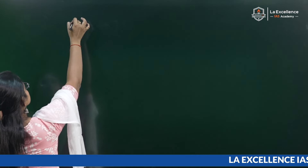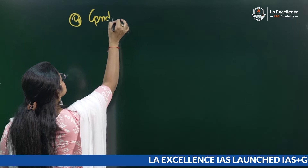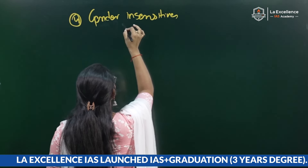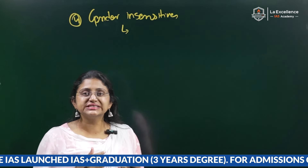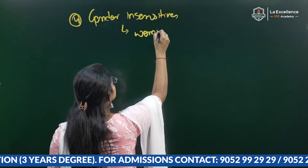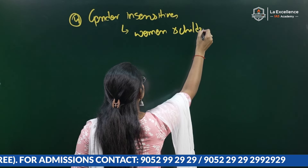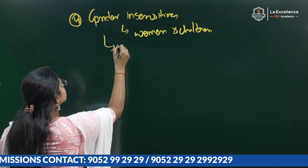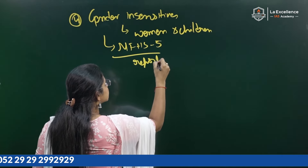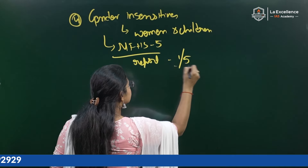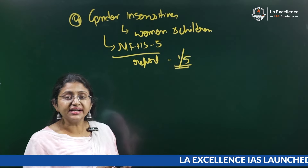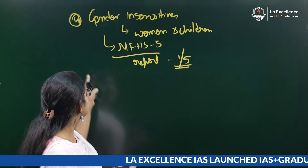The fourth reason is gender insensitivity. Most of the laws are outdated in nature and lack sensitivity towards gender — particularly women and children. The National Family Health Survey 5 report states that one in five women face physical or sexual abuse in their daily lives. We can see there is a lack of deterrence for this kind of activity, as these activities are still happening.